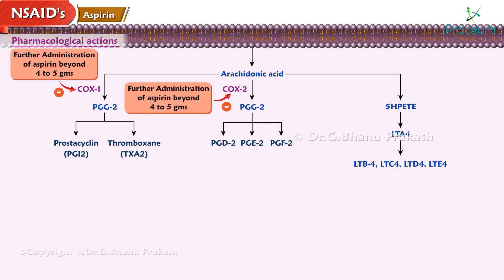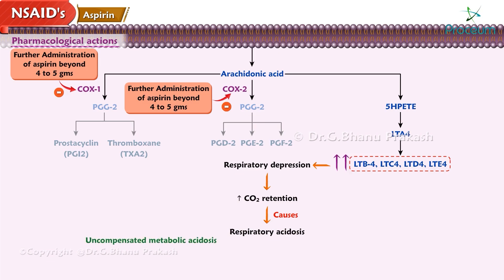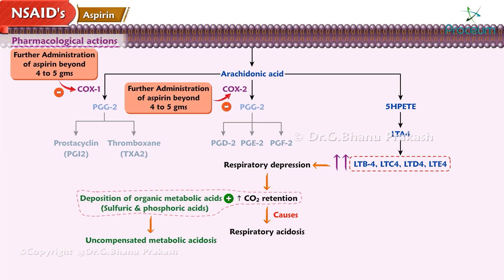Further administration of aspirin beyond 4 to 5 grams leads to respiratory depression and increased CO2 retention, which in turn causes respiratory acidosis. Uncompensated metabolic acidosis occurs following accumulation of CO2 along with deposition of organic metabolic acids such as sulfuric and phosphoric acids.